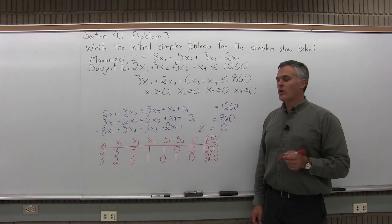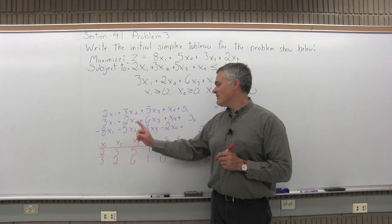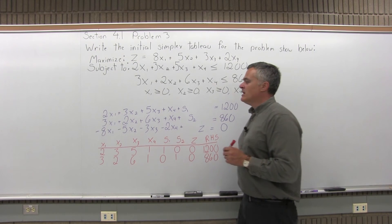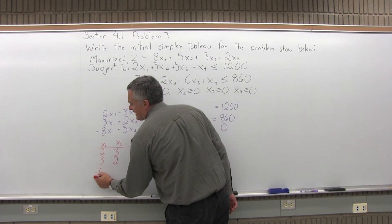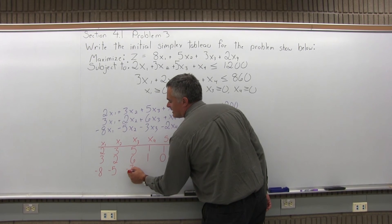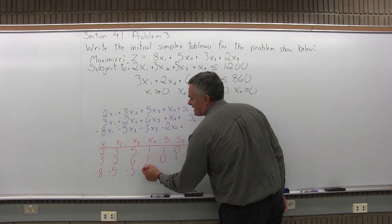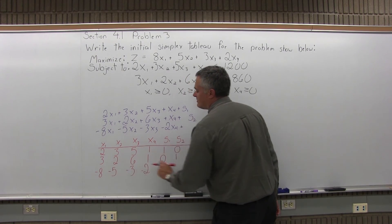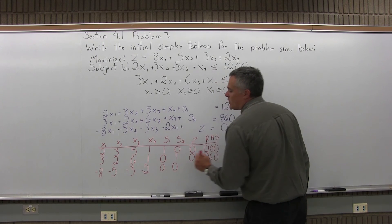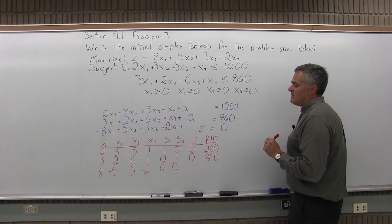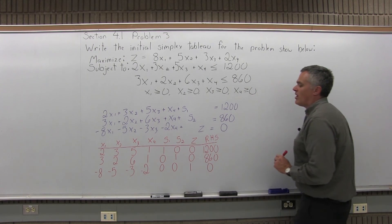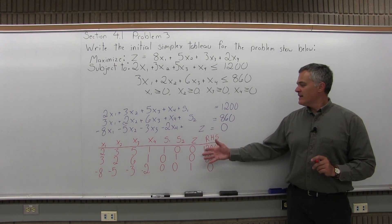One more row for the matrix. The third equation is negative 8x1 minus 5x2 minus 3x3 minus 2x4 plus z equals 0. The negative 8x1 puts negative 8 in the x1 column, negative 5x2 puts negative 5 in x2, negative 3x3 puts negative 3 in x3, and negative 2x4 puts negative 2 in x4 — don't forget the negatives, that's important. The bottom equation had no slack variables, so s1 and s2 both get a 0. There is a z, so the z column gets a 1, and the RHS is 0. And that's the answer for this problem.